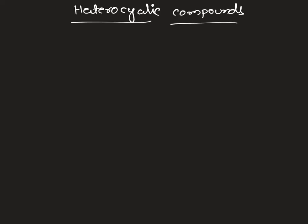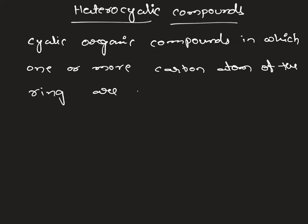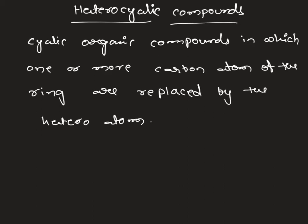What are heterocyclic compounds? These are the cyclic organic compounds in which one or more carbon atoms of the ring are replaced by a heteroatom. These we call heterocyclic compounds.